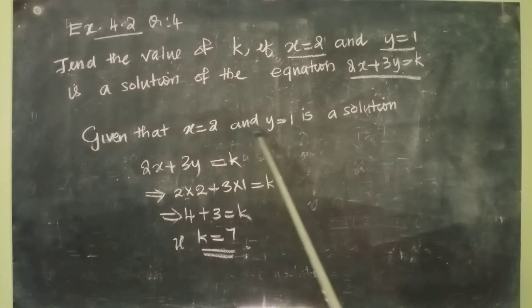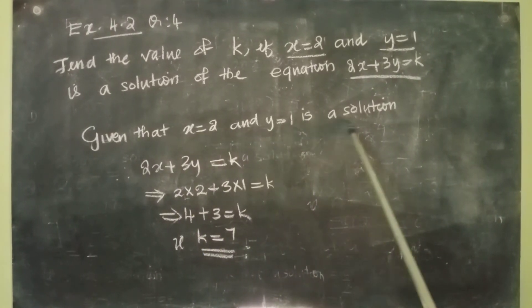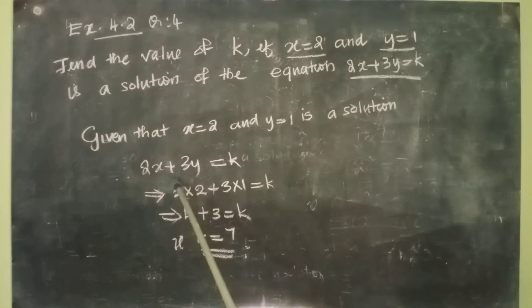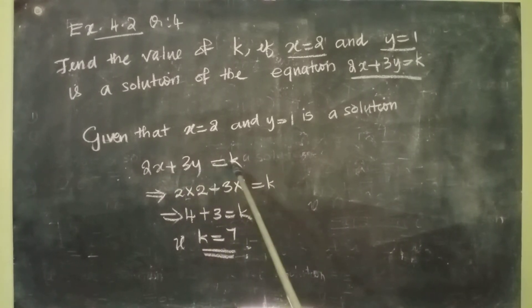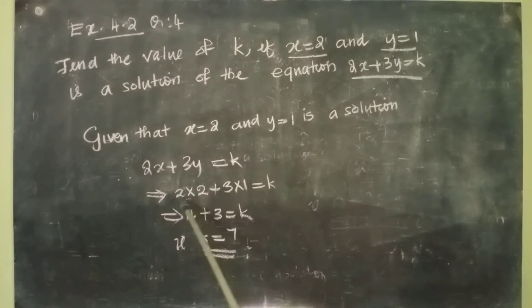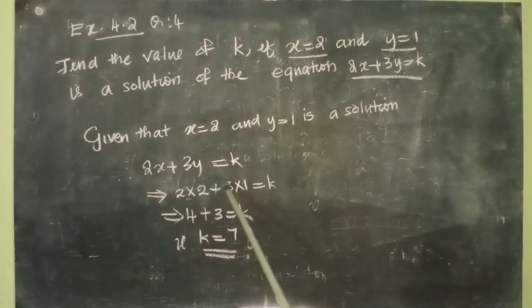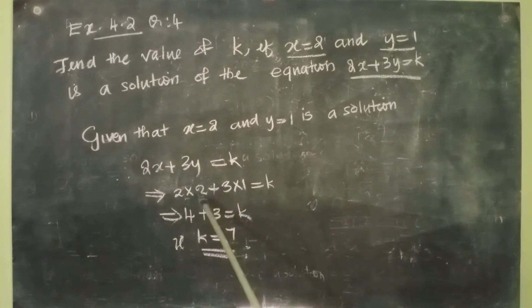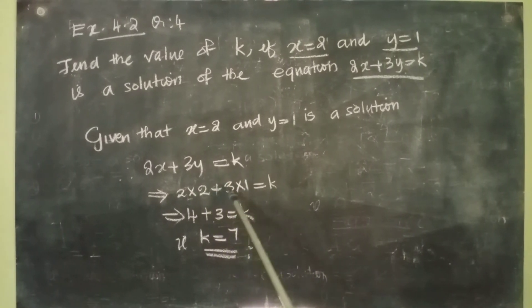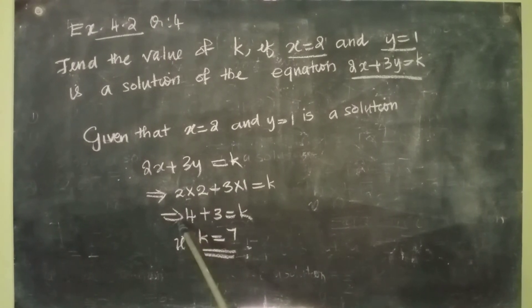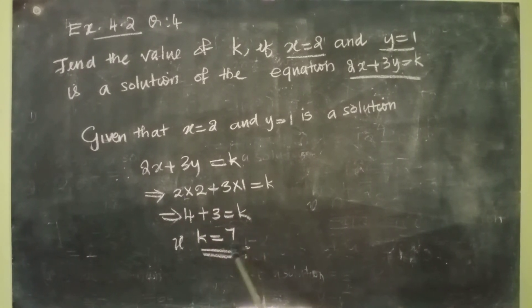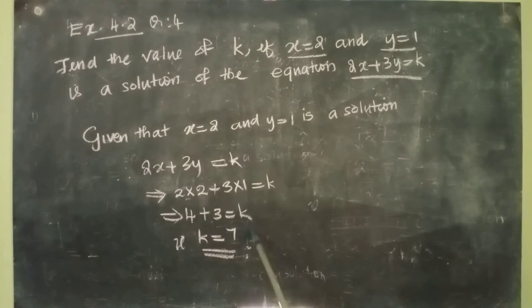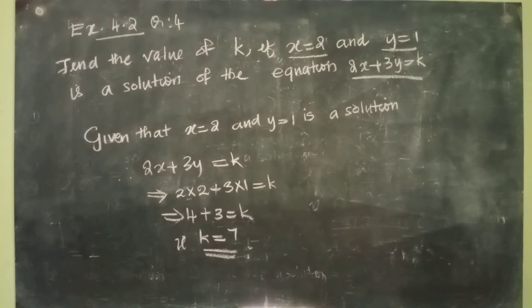So let us substitute x equal to 2 and y equal to 1 in this equation. Given that x equal to 2 and y equal to 1 is a solution, therefore 2x plus 3y equal to k implies 2 into 2 plus 3 into 1 equal to k, which gives 4 plus 3 equal to k. That is k equal to 7. So we got the value of k equal to 7.